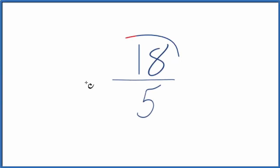Let's simplify the fraction 18 over 5, 18 fifths. We want to find another fraction that's equivalent, has the same value as 18 over 5, just simplified or reduced to lowest terms.